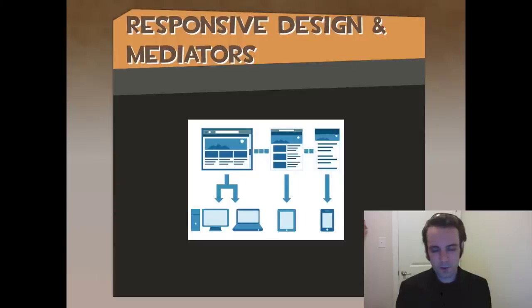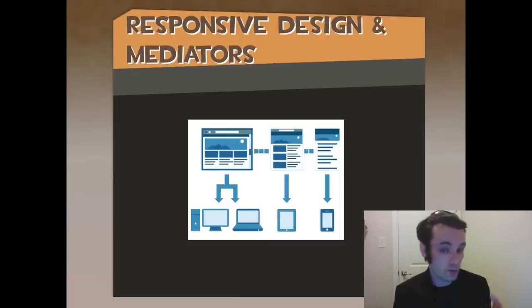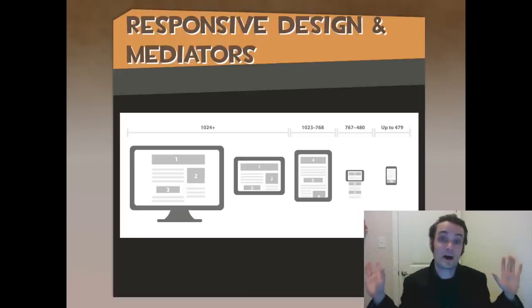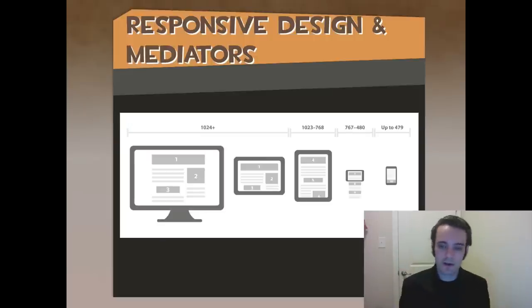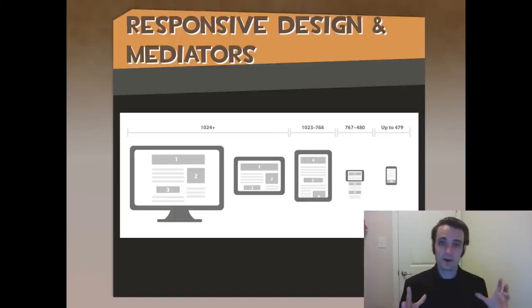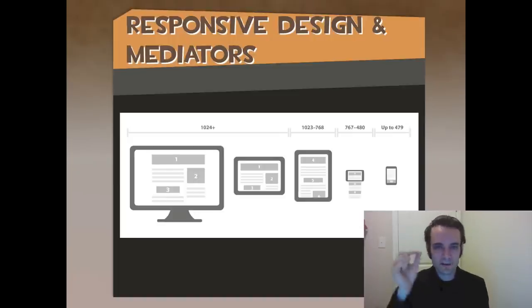Now, where do mediators come in? We've talked about views being responsive for what you see — so we're talking about multiple views. At a breakpoint like 1024, it shows the same view for a set of devices. For devices that are vertical or rotated, it shows a different view. Those are different views, and the mediator is going to give them that data to show things in different ways.